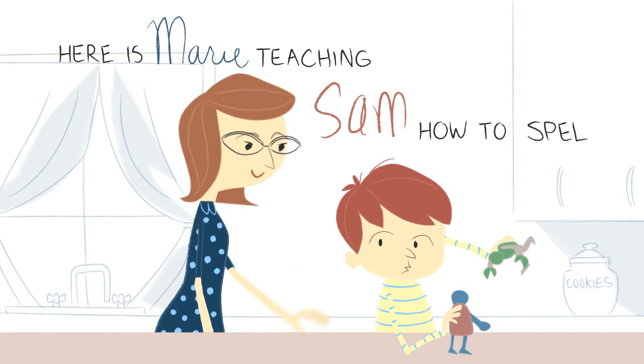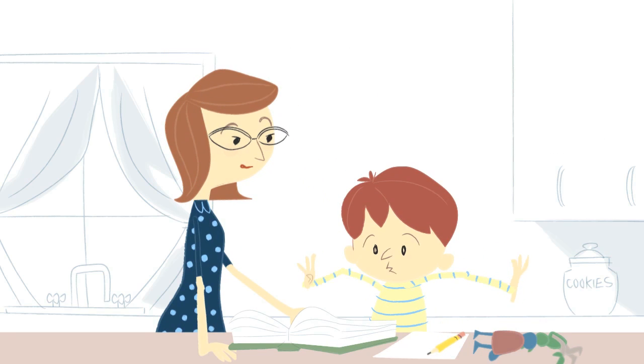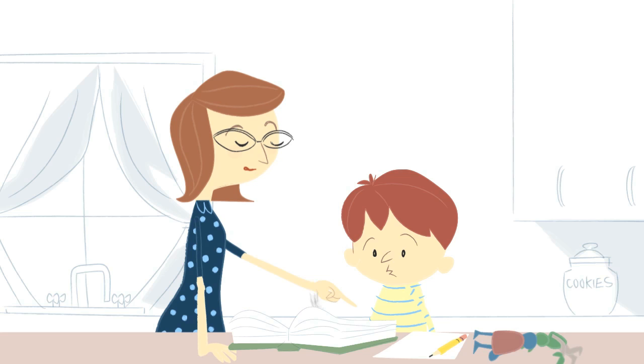Here is Marie teaching Sam how to spell. Marie is using a typical spelling program. She gives Sam a list of words to spell on Monday, and he crams them into his brain for a test on Friday.